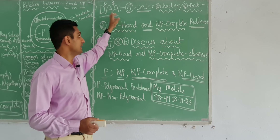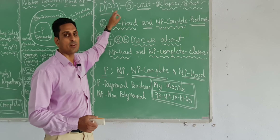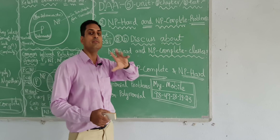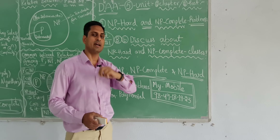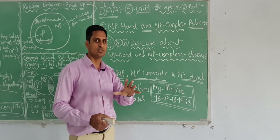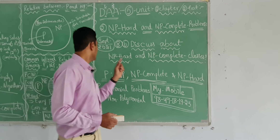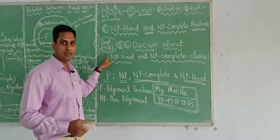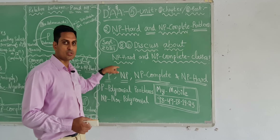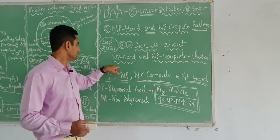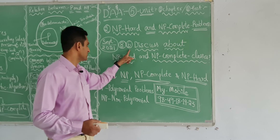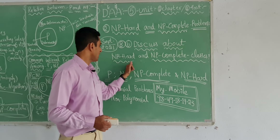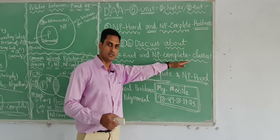Design and analysis of algorithms, fifth unit. Generally in fifth unit you will get direct questions. In September 2021, this question was asked — question 8B: discuss about NP-hard and NP-complete classes.